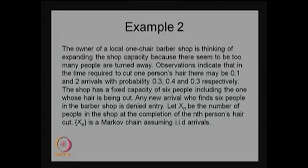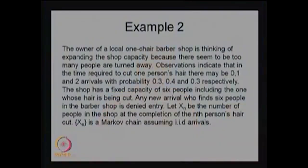The Markov property is satisfied: the probability that Xn+1 takes some value given that all previous values are known is the same as the conditional probability of Xn+1 given only Xn. The future distribution given present and past information is the same as the future distribution given only the present. Therefore this Markov property is satisfied, and Xn forms a discrete time Markov chain — specifically a time-homogeneous discrete time Markov chain.